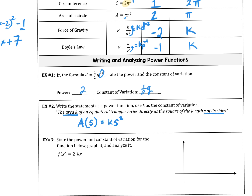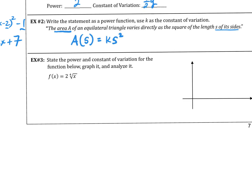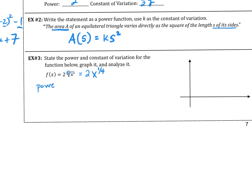Now state the power and the constant of variation for a root expression. How do we go between root form and exponent form? It's a fraction. So 2 times the fourth root of x becomes 2 times x to the one-fourth — remember, power over root from algebra 2. The power is 1/4, and the constant of variation is 2.